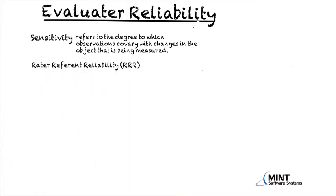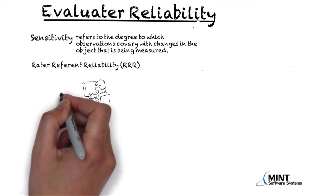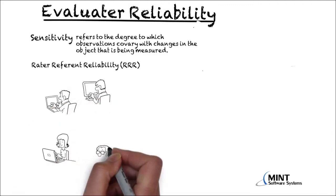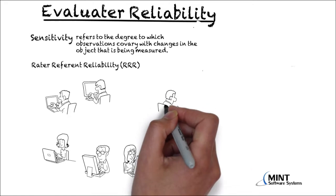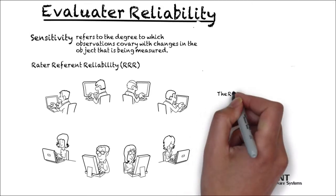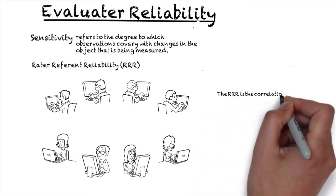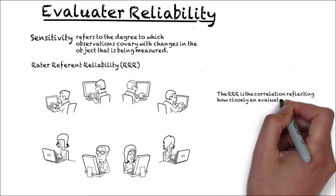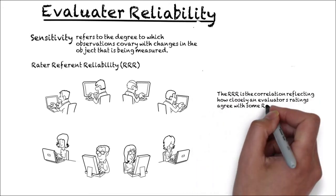Let's assume we have a group of evaluators who must grade the same aircrew performance that was previously scripted in a video. The video captures specific deviations from the qualification standards on a four-point grading scale. In this case, we have an objective basis for grading performance: the reference score. The rater-referent reliability is the correlation reflecting how closely an evaluator's ratings agree with some referent.